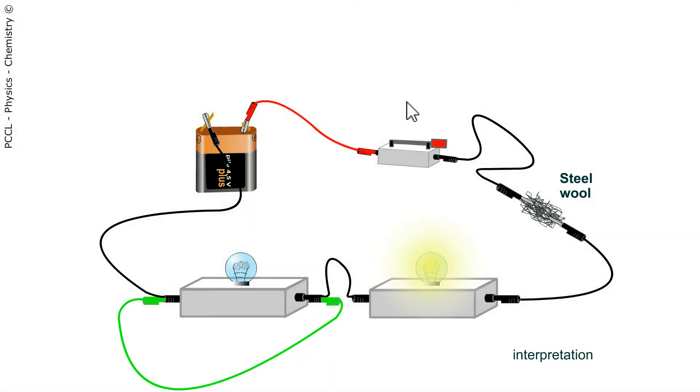We observe that the lamp which is not short-circuited shines. The one which is short-circuited does not shine, and the steel wool remains intact. We will try to interpret with the diagram.